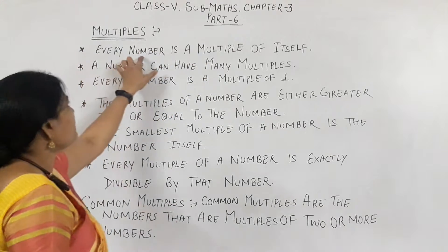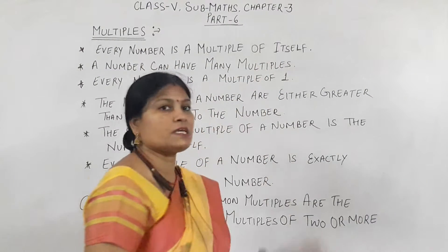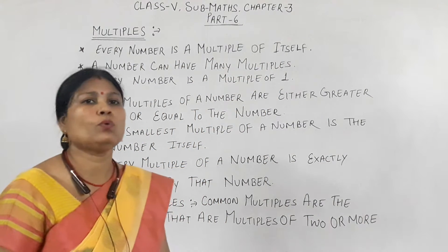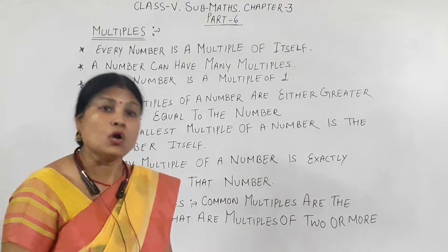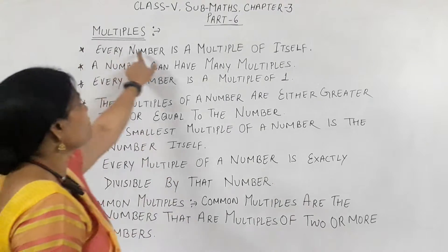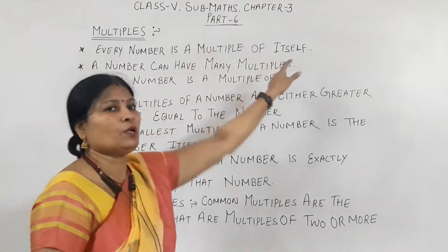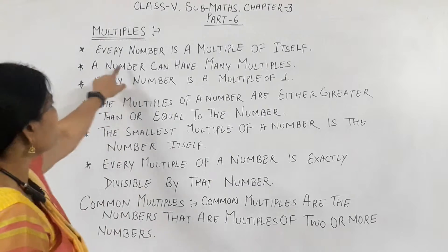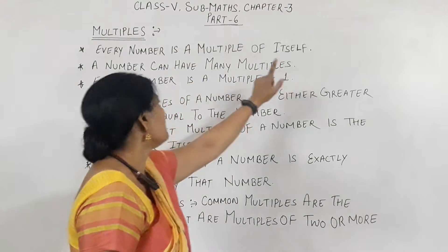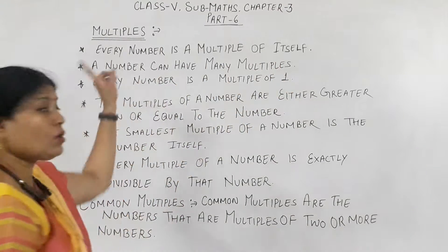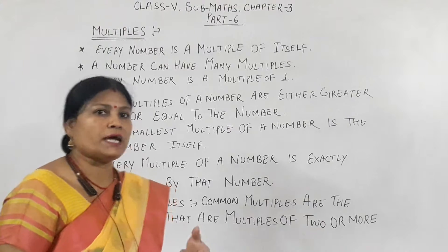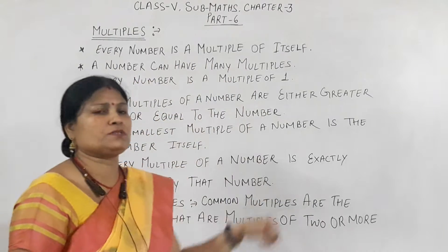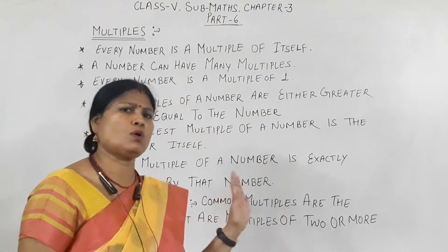First: every number is a multiple of itself. Because if I multiply 2 by 1, 2 ones are 2. So we can say every number is a multiple of itself. Next: a number can have many multiples. I have already told you that a number has so many multiples — we can find out so many.